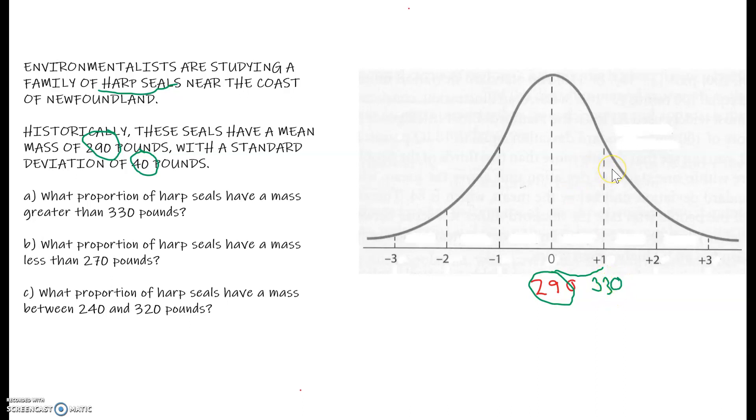So I am looking for this area right here. This is not the neatest drawing I've ever done, but it'll work. But we know from the 68-95 rule that 68% of observations are within one standard deviation. So therefore, this segment here and this segment here have a total of 32%. So therefore, this piece is 16%.